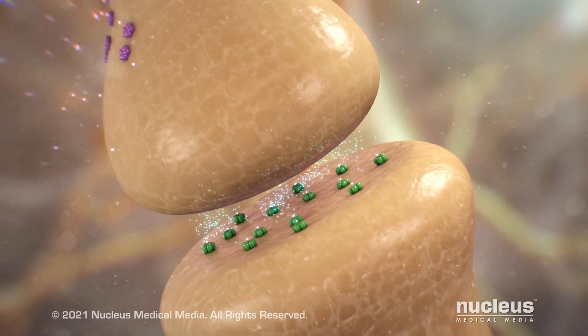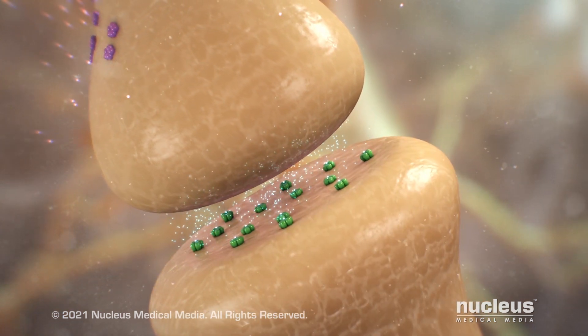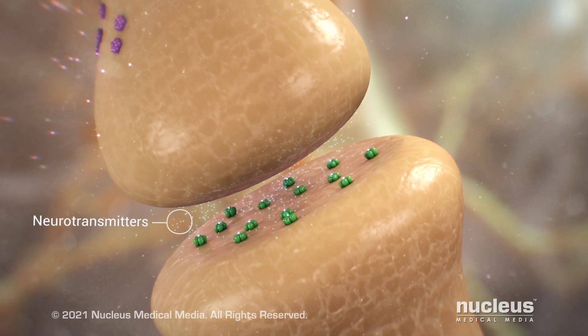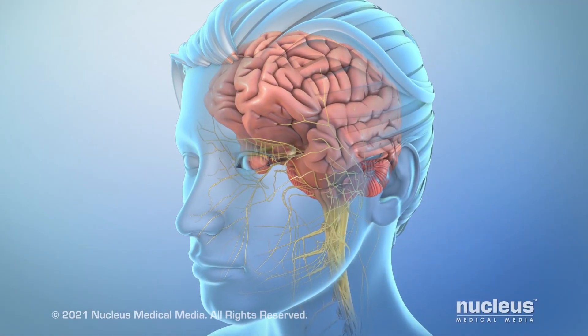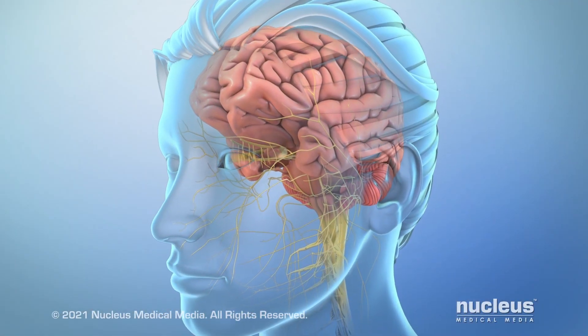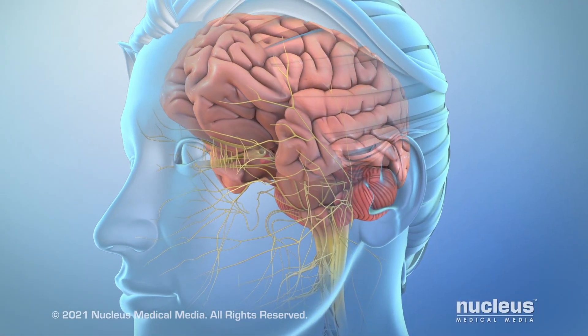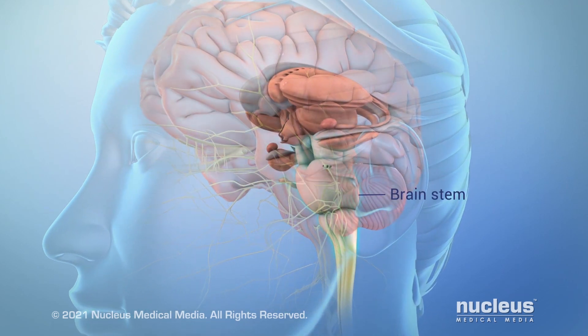At the end of the nerve, the signal moves to the next via chemicals called neurotransmitters. Communication with the brain occurs via pathways and nerve centers at the base of the brain, called the brainstem.